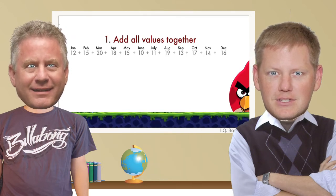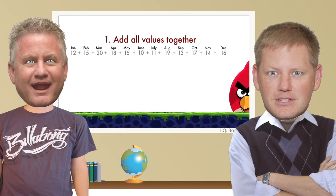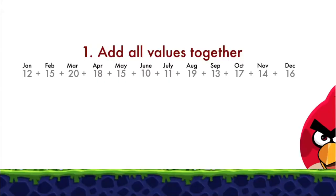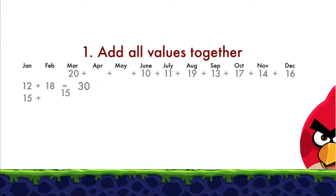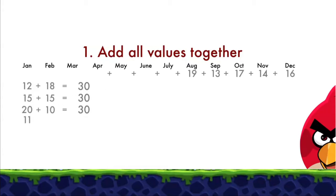When I add this kind of stuff up, I like to do it the easy way. I see a 12 there first, and then there's an 18 — that makes 30, Mr. Ruff. So we're going to put easy numbers together: 12 and 18 makes 30. Then there's a 15 and another 15, so that's another 30. And then there's a 20 and a 10 — that's another 30. And then there's an 11 and a 19 — that's 30.